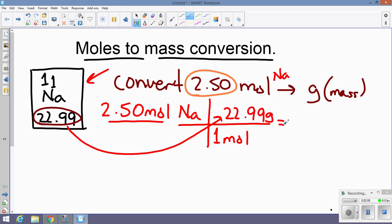Therefore, when I multiply 2.50 times 22.99 divided by 1, which should make no difference at this point, the answer I get is 57.468. That will be grams of sodium.